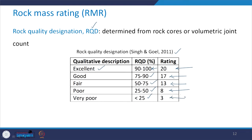As it was in the case of UCS, similarly here with RQD, as the quality gets better, the rating will be larger — it increases in that direction.